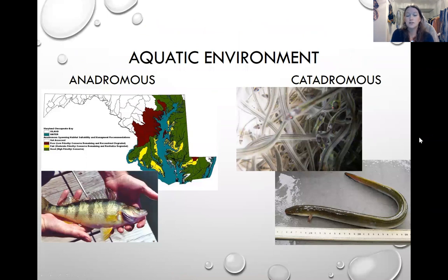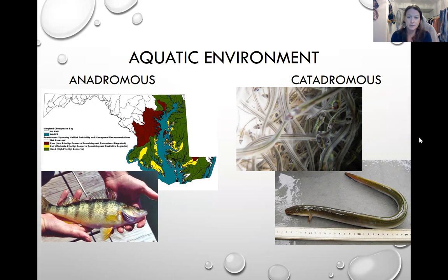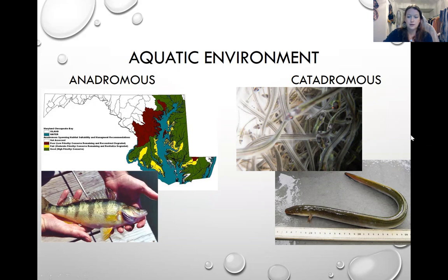We also want you to know fish migration and spawning. Anadromous fish migrate up river from the ocean to spawn — yellow perch is an example. Catadromous is the opposite — they go from the river out to sea to spawn. The only catadromous species we have is the American eel.